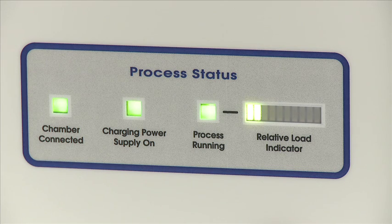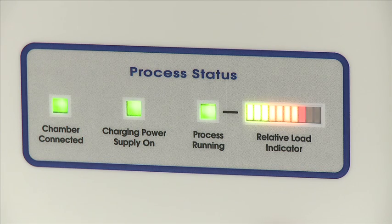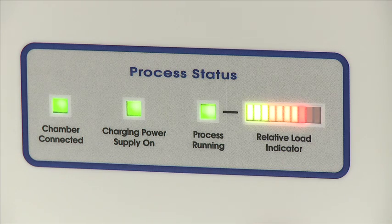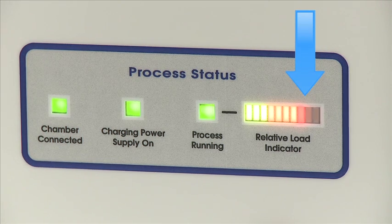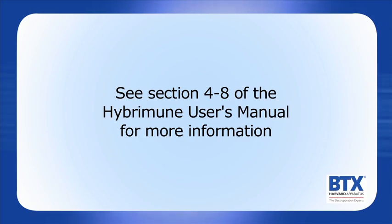On the relative load indicator, a few bars should light up green for about 15 seconds because the 40-volt sine wave is being applied. It will increase in bars because of the 70-volt sine wave for about 20 seconds. During the entire run, it is normal to see the bars increase and decrease. It is not typical to see the bars go into the red. If this occurs, it is because there are too many ions present in the sample. See Section 4-8 of the HYBRAMUN user's manual for more information.